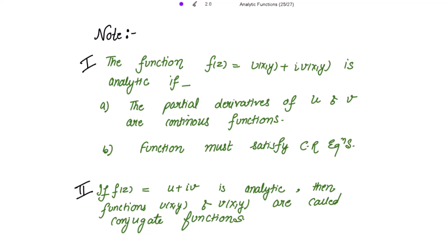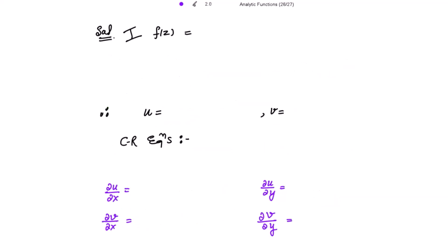Note that if f(z) = u + iota v is analytic, then the functions u(x,y) and v(x,y) are called the conjugate functions. Now moving on to the solution, we first need to show that the partial derivatives of the function are continuous.